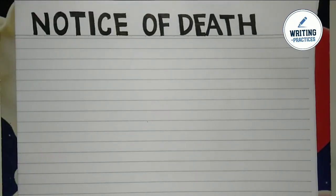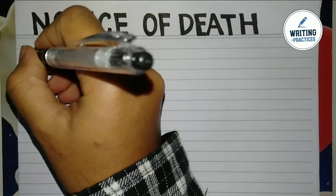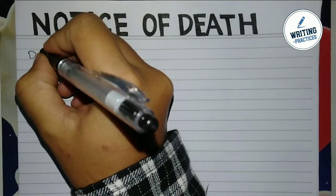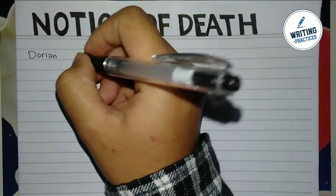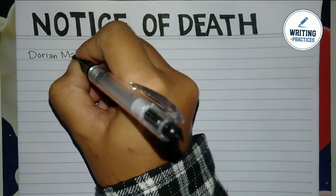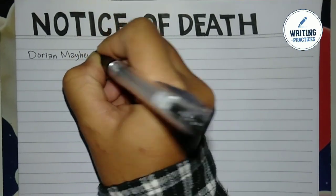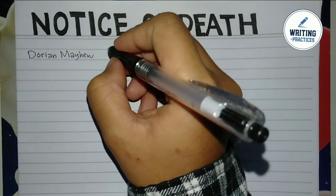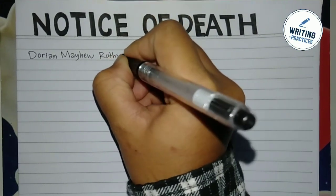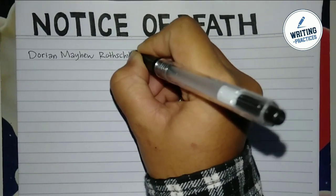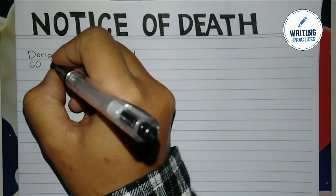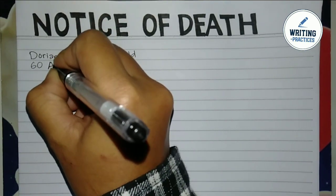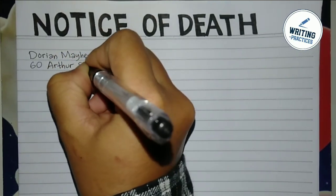Hello guys, welcome back to my channel Writing Practices. Today we are going to learn how to write a notice of death for insurance cancellation. A notice of death for insurance cancellation is a letter written to inform the insurance company that the person who applied for insurance has already passed away, and the family or the writer requests to cancel the insurance and asks the unused premiums to be sent to the writer. Usually this letter is used for insurance for cars and other transportation.